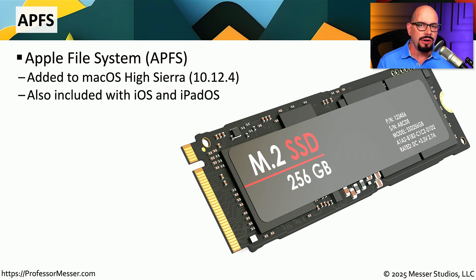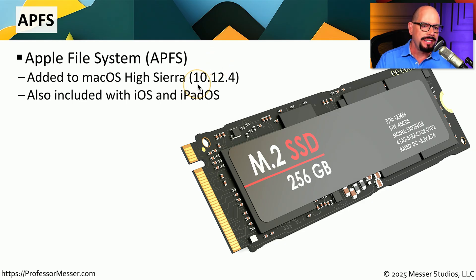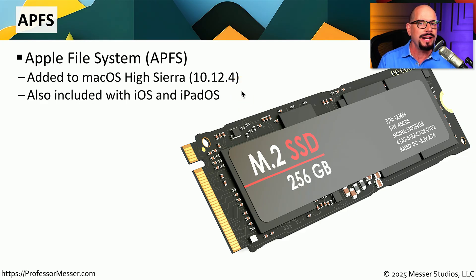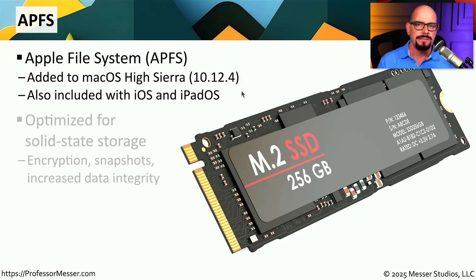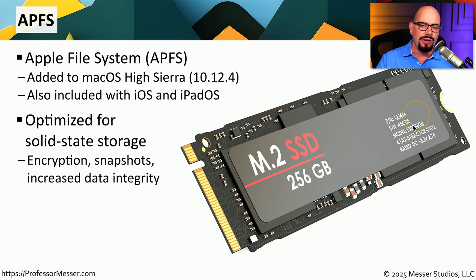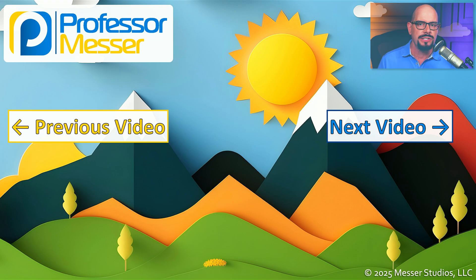Apple also has their own file system with the Apple File System, or APFS. This was made available in macOS version 10.12.4, and is also available in iOS and iPadOS devices. This file system was written to optimize data on SSDs or solid state drives. It builds in encryption, has the ability to quickly save and restore from a snapshot, and there are increased data integrity options within the APFS file system.